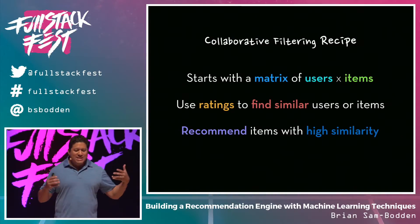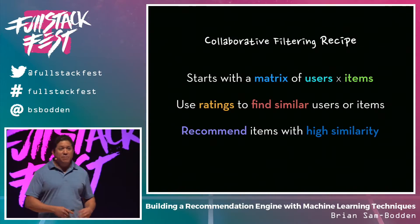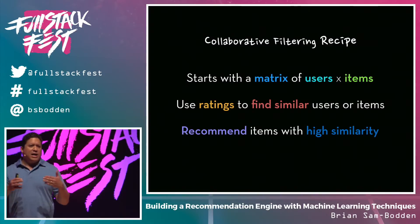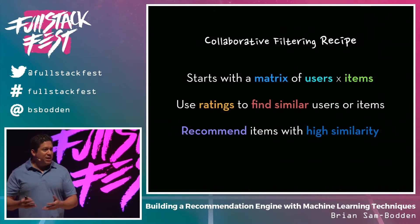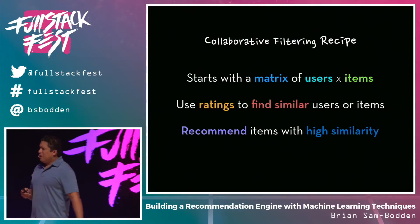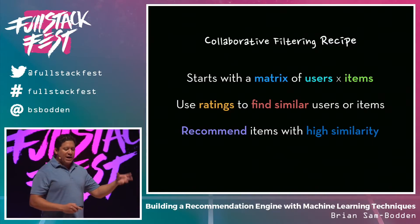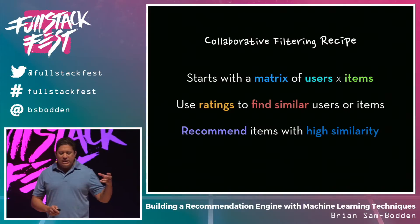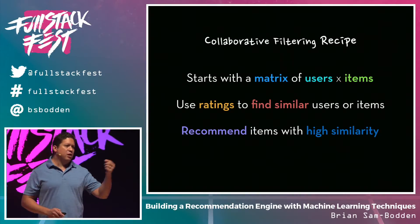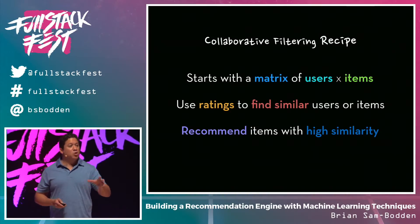So to deal with this type of filtering, you start with a matrix called a utility matrix. It's a matrix of your users and your items, and on the intersection of those you have either the star rating or the comments or whatever the user provided for that specific item. You basically want to use the ratings of other users to find similar users — and the users are items. There are two approaches, and they scale differently based on your environment: if you have a lot of users and a lot of items, or very few items and many users, that determines which approach you will use.